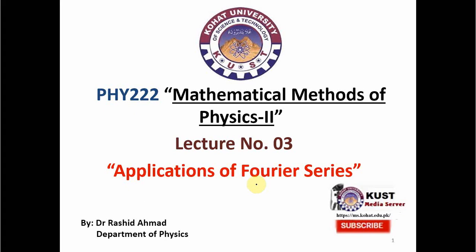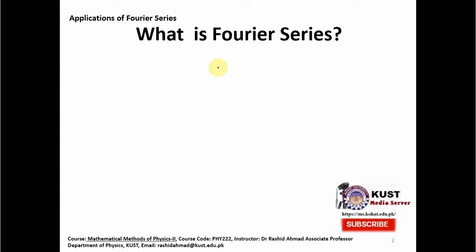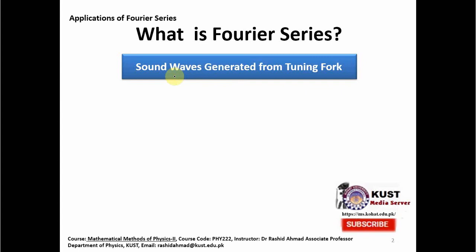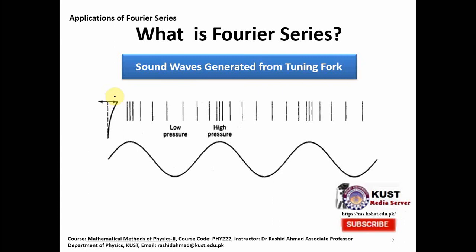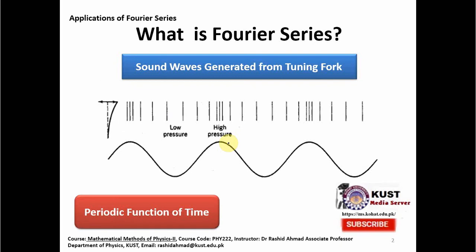We start with the meaning of the Fourier Series. Imagine that you have a tuning fork and sound waves are generated from it when you strike it against something. It starts to vibrate and its prongs put pressure on the air, producing low and high pressures in this pattern into the air. From the tuning fork towards our ear, this combination of low and high pressure travels through the air, and in this way we hear the sound of the vibrating tuning fork. These low and high pressures are actually periodic functions of time, depending on time and also position.